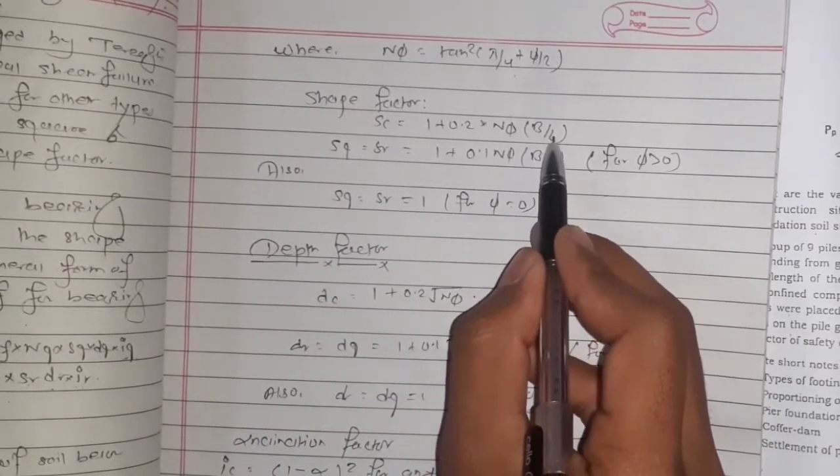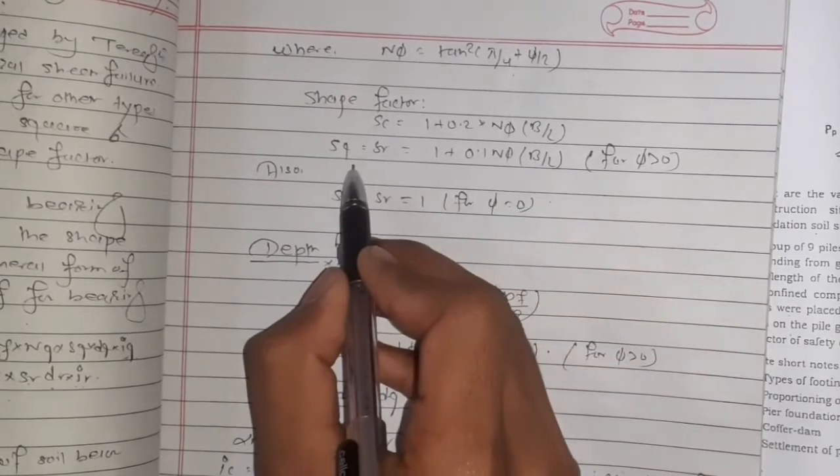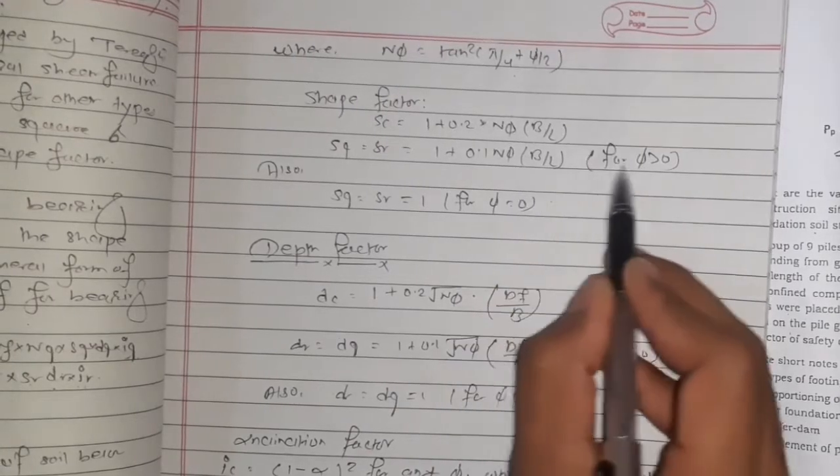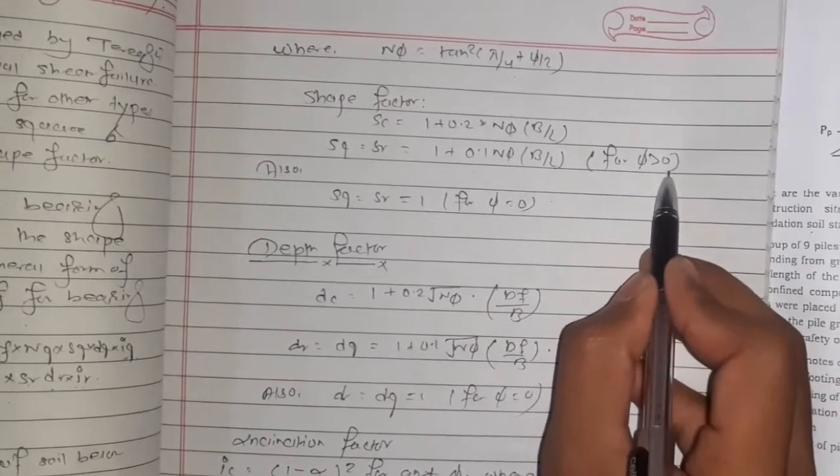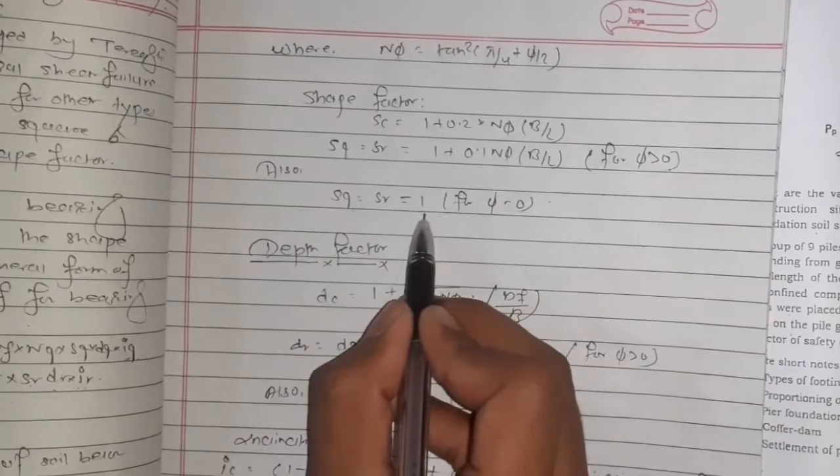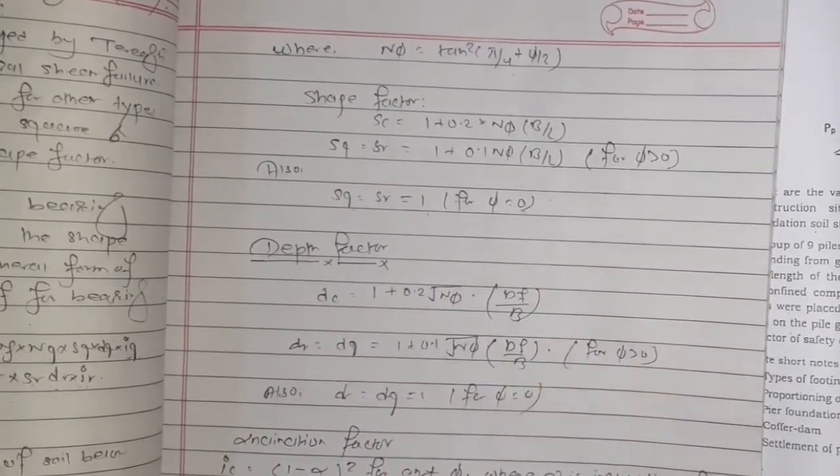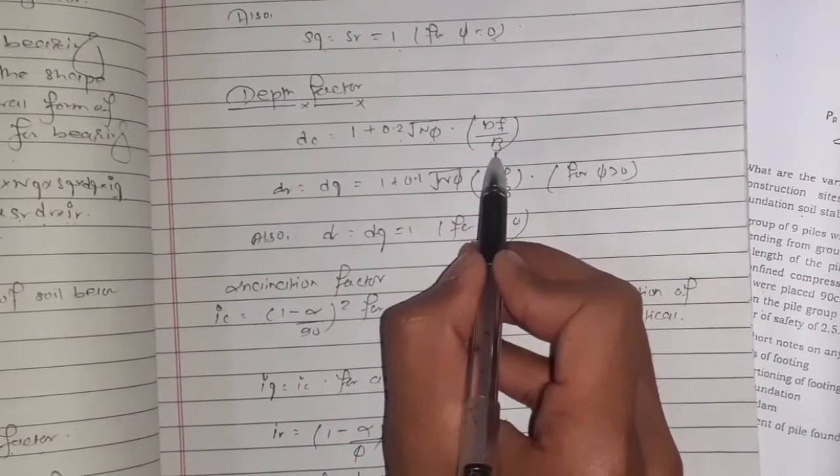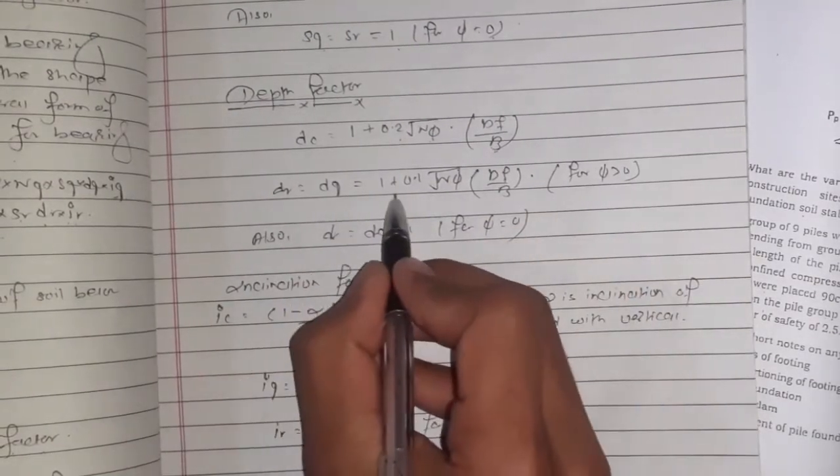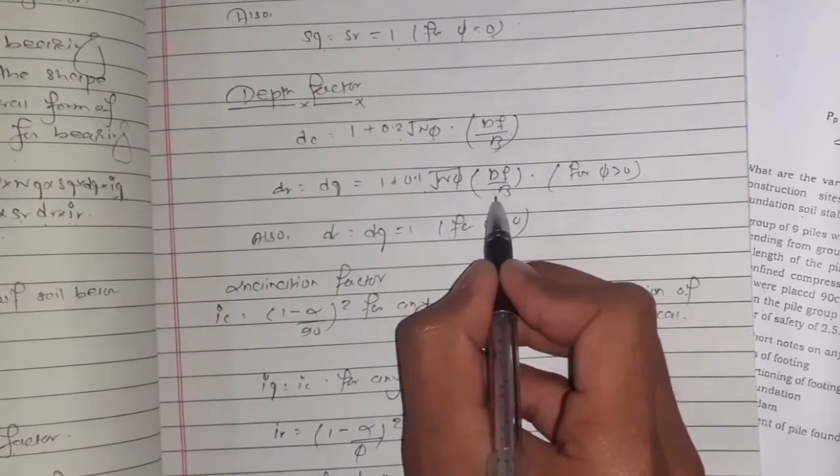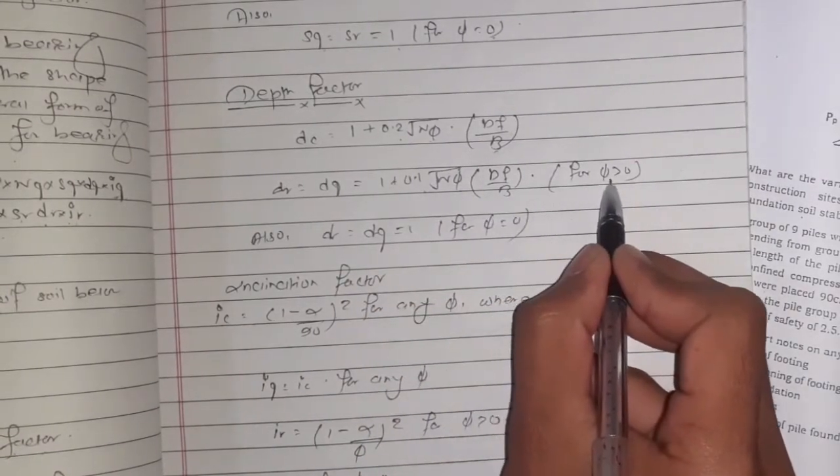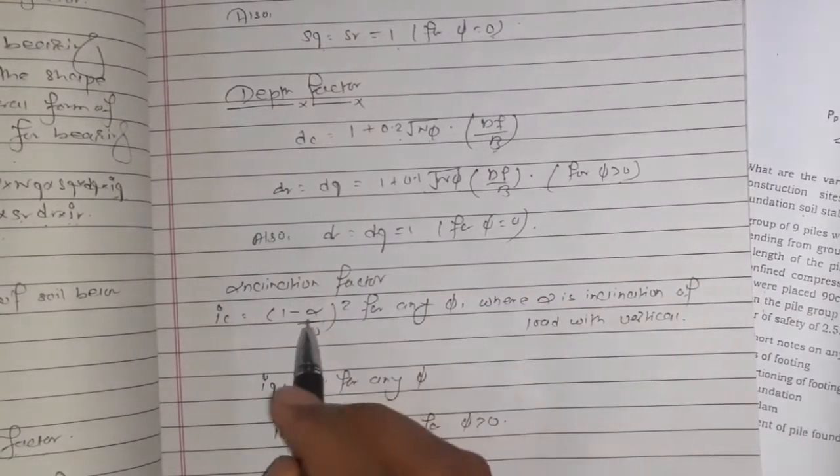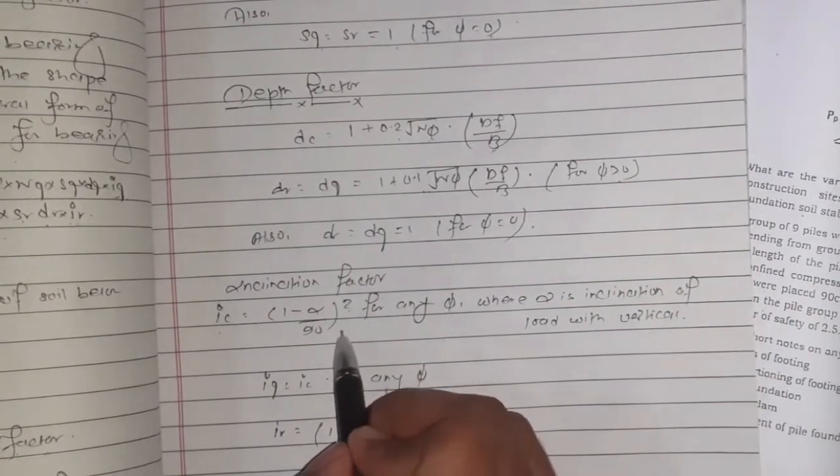Sγ = 1 + 0.1·Nφ·B/L for φ > 0. For depth factors: dc = 1 + 0.2·√Nφ·df/B, dq = 1 + 0.1·√Nφ·df/B for φ > 0, but when φ = 0, dγ = dq = 1. For inclination factor: ic = (1 - α/90)², where α is inclination of the load with vertical.